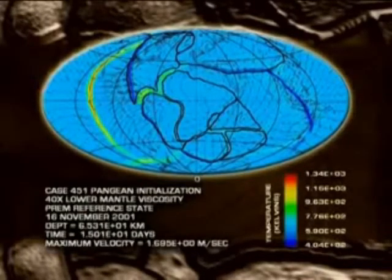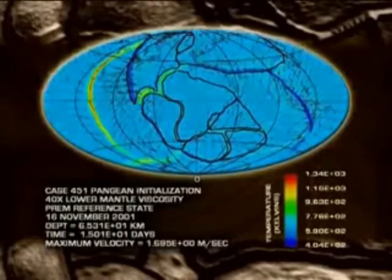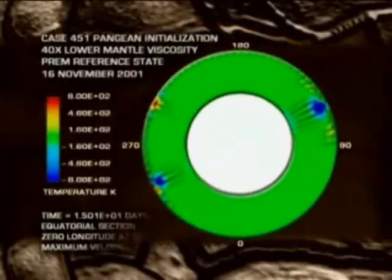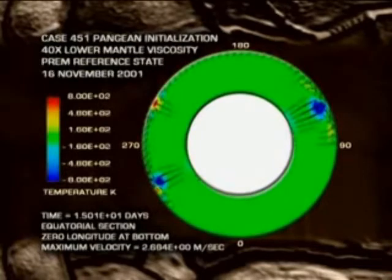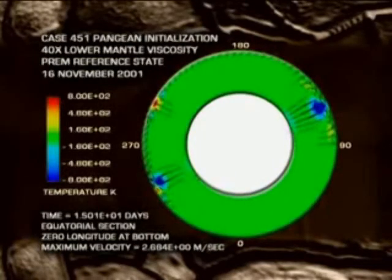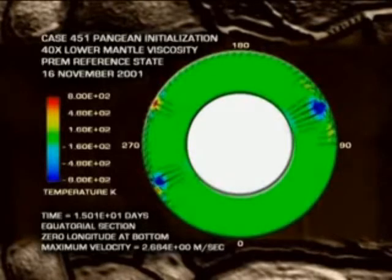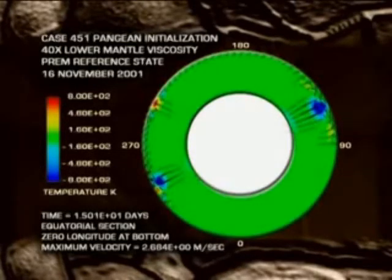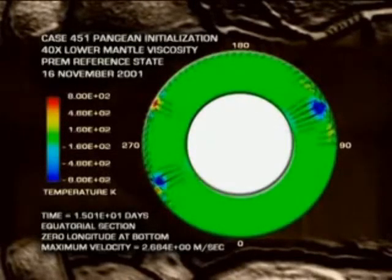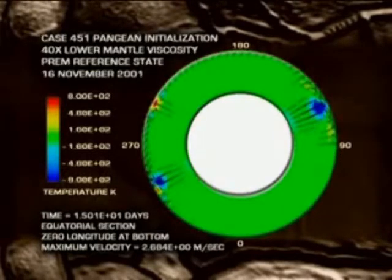So that's a view at 65 kilometers depth. This is the slice through the equator. We see the cold material sinking, and it thickens. Those blobs get thicker because I've put in a higher strength in the lower part of this mantle, as various lines of evidence indicate.